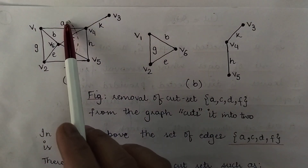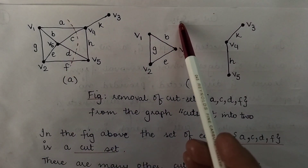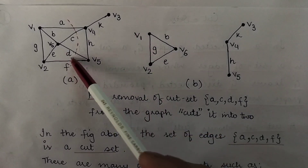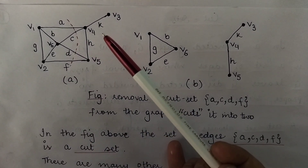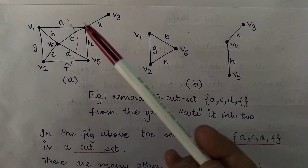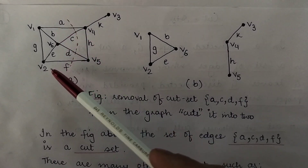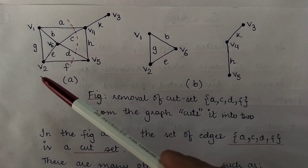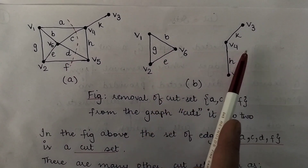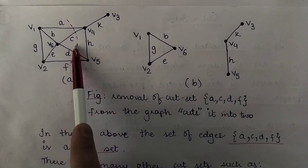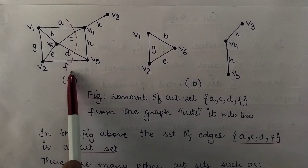The other condition is that the proper subset of these edges should not leave the graph disconnected. Proper subsets of {A, C, D, F} include C, A, D, F, A-C-D, C-D-F, A-D-F, and so on. The removal of any of these proper subsets from the graph does not leave the graph disconnected. So I can clearly say that A, C, D, and F is a cut set.